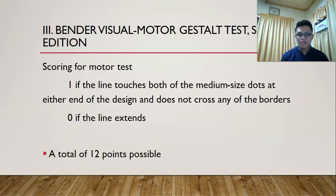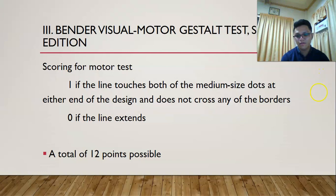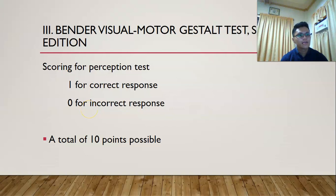Scoring for the motor test is 1 if the line touches both medium-sized dots at the end of the design and does not cross any of the borders; if it extends, the score is 0, for a total of 12 points. For the perception test, the score is 1 for each correct response and 0 for incorrect response, for a total of 10 points.